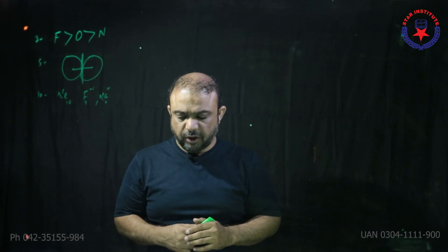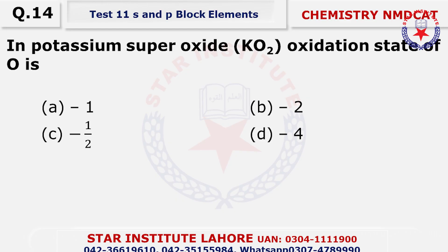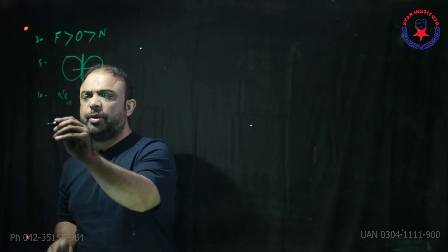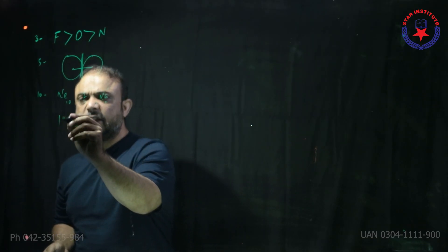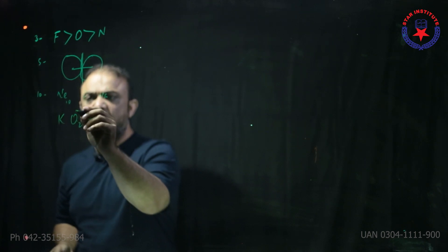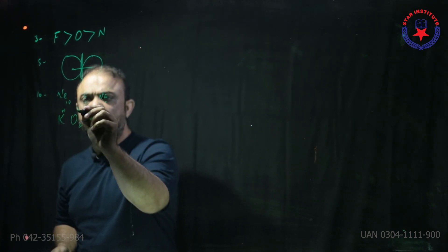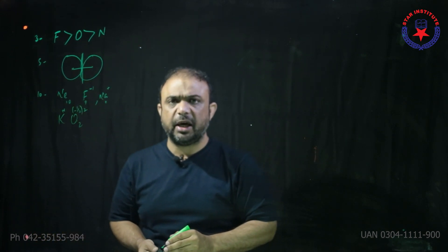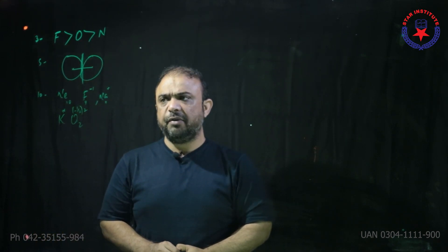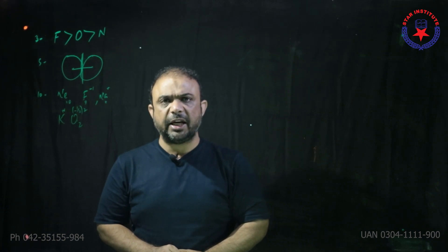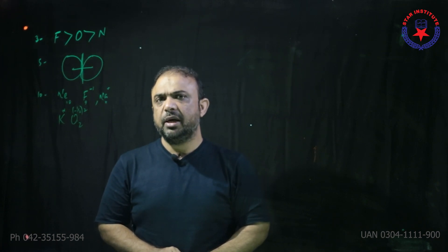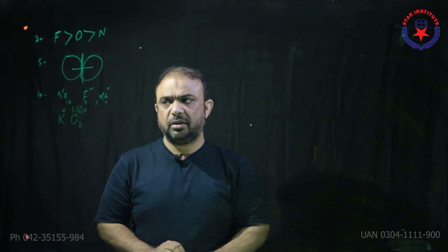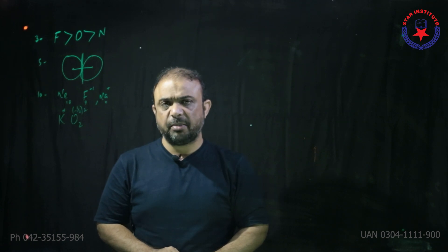Question number 14 (labeled 40 in transcript): In potassium superoxide KO₂, the oxidation state of oxygen. Potassium is +1, so oxygen is −½. One oxygen unit gives −½, and two oxygens together balance the +1 of potassium. Compounds in which oxygen carries a −½ oxidation state are called superoxides. This is an example of a superoxide.